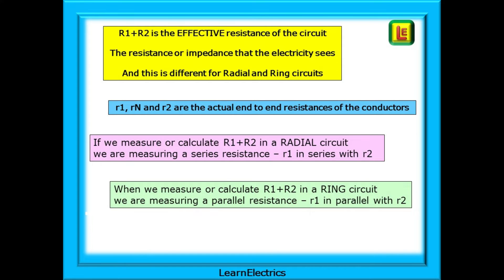If we measure or calculate big R1 plus R2 in a radial circuit, we are measuring a series resistance — R1 is in series with R2, and the effective resistance will increase as the two conductor resistances add together. However, when we measure or calculate big R1 plus R2 in a ring circuit, we are measuring a parallel resistance. Little r1 is in parallel with little r2, and the effective resistance decreases — it becomes smaller.